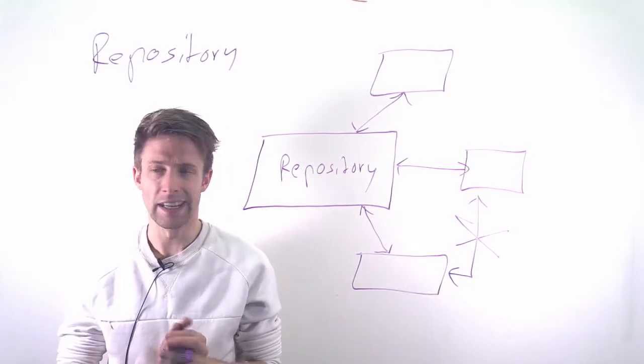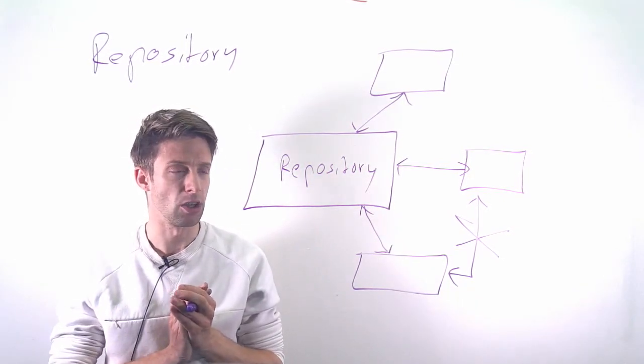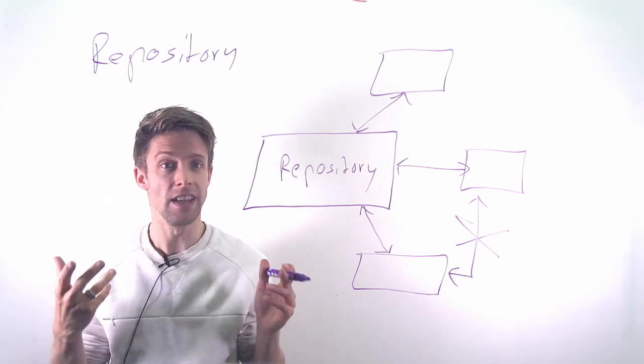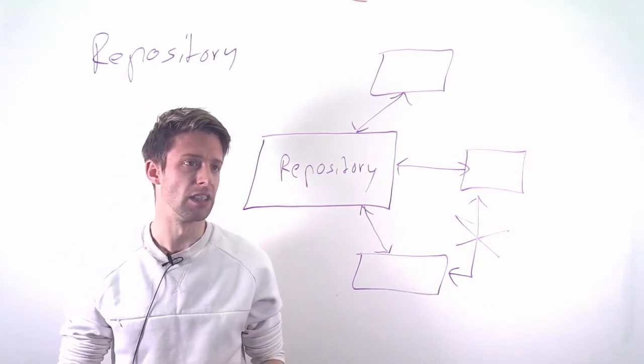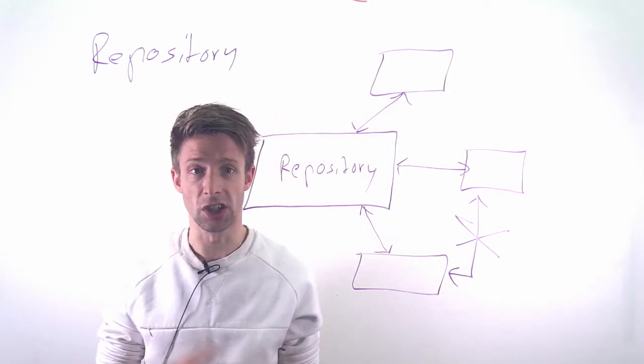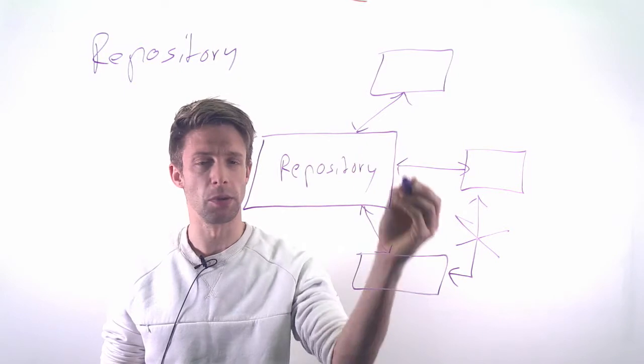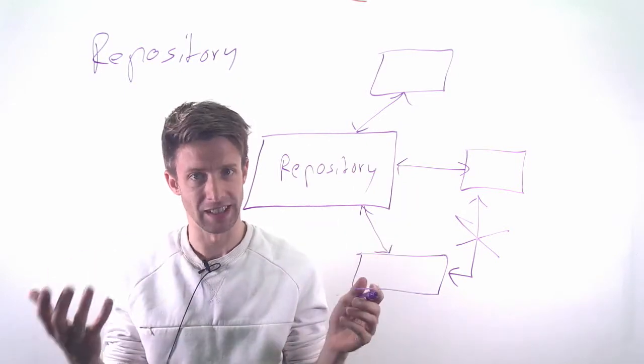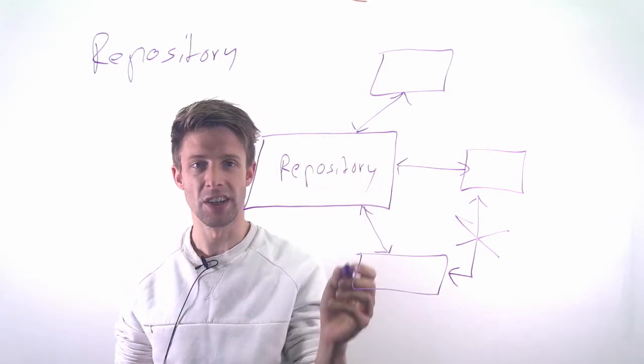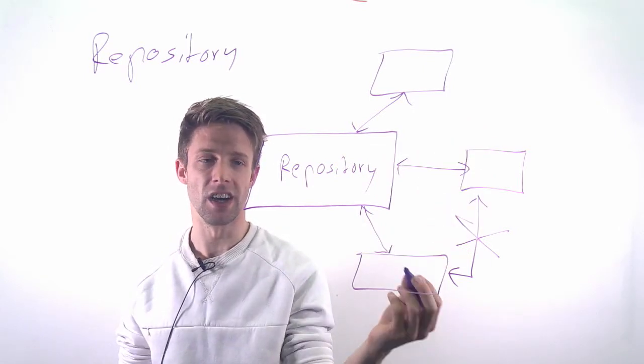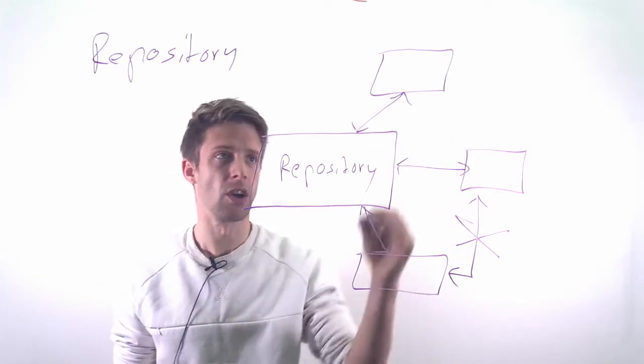They don't talk to each other, and a common application in which you have this pattern is, for example, an IDE, a development environment. So imagine, for example, a code editor like VS Code. The code, the files, the repository that you access like a git repository, they are in the middle, and different components of the IDE are accessing and working on this code.